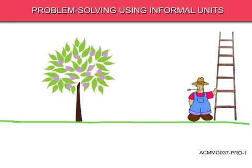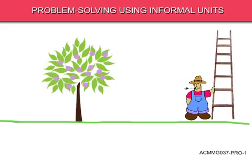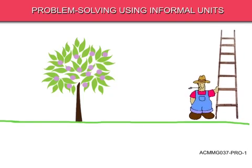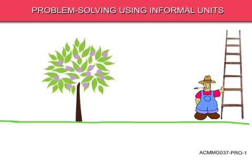Hi guys, today we're going to look at how we can solve problems using informal units to measure the length of objects. You can see I've got the farmer here and he's holding a ladder, and we've got a whole bunch of trees on his farm. There's just one visible but there's more hiding.